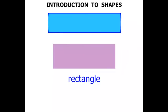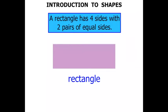What about this shape? This is a rectangle. A rectangle has four sides with two pairs of equal sides. So there's one, two sides that are equal. And then the other two sides, this one and that one, again, they're equal to each other.